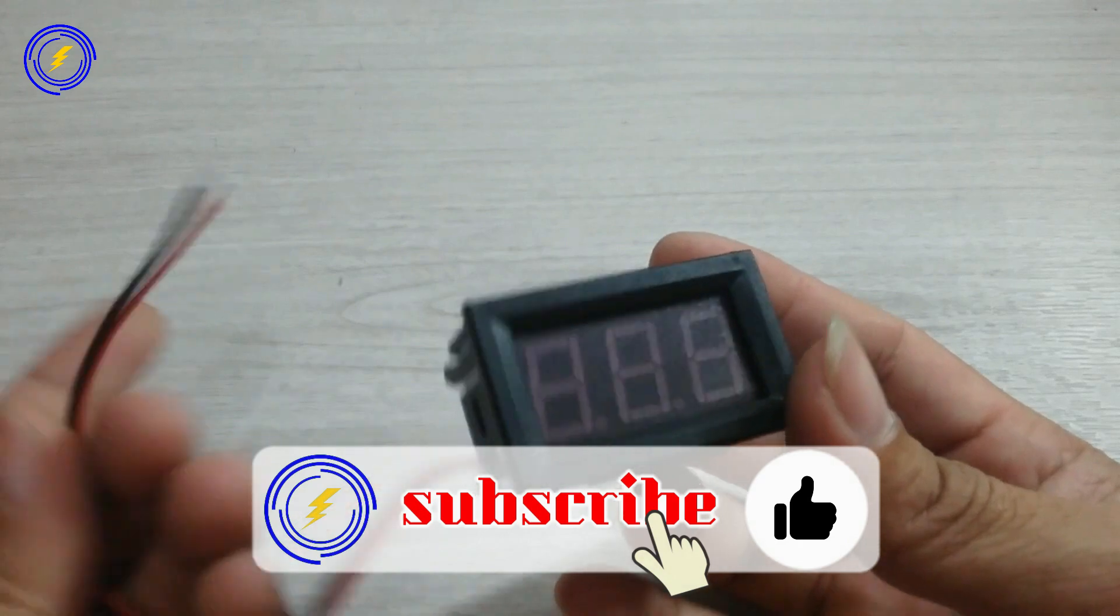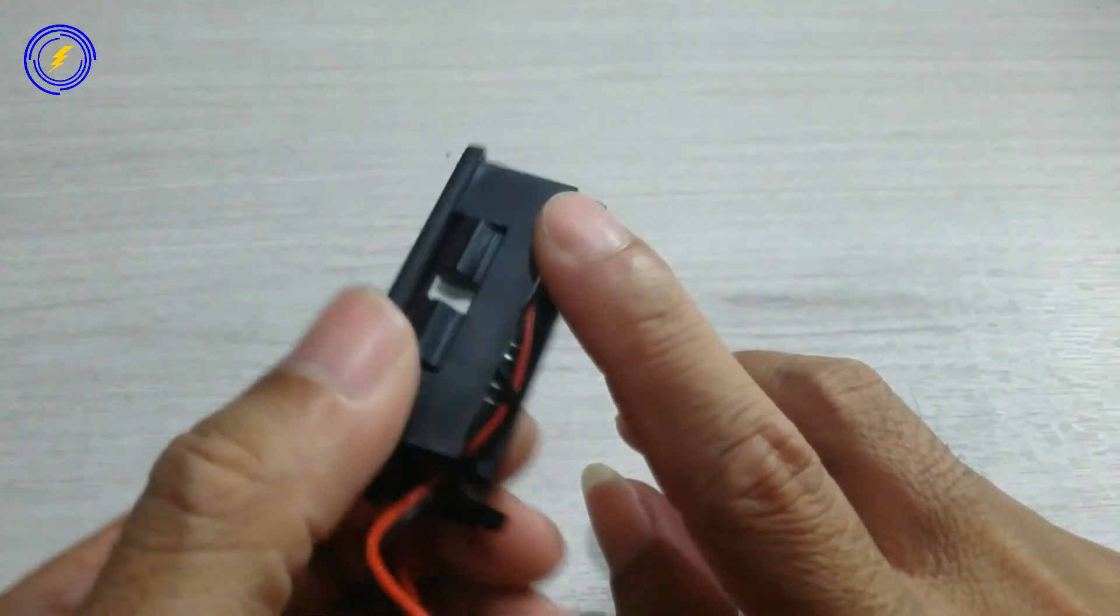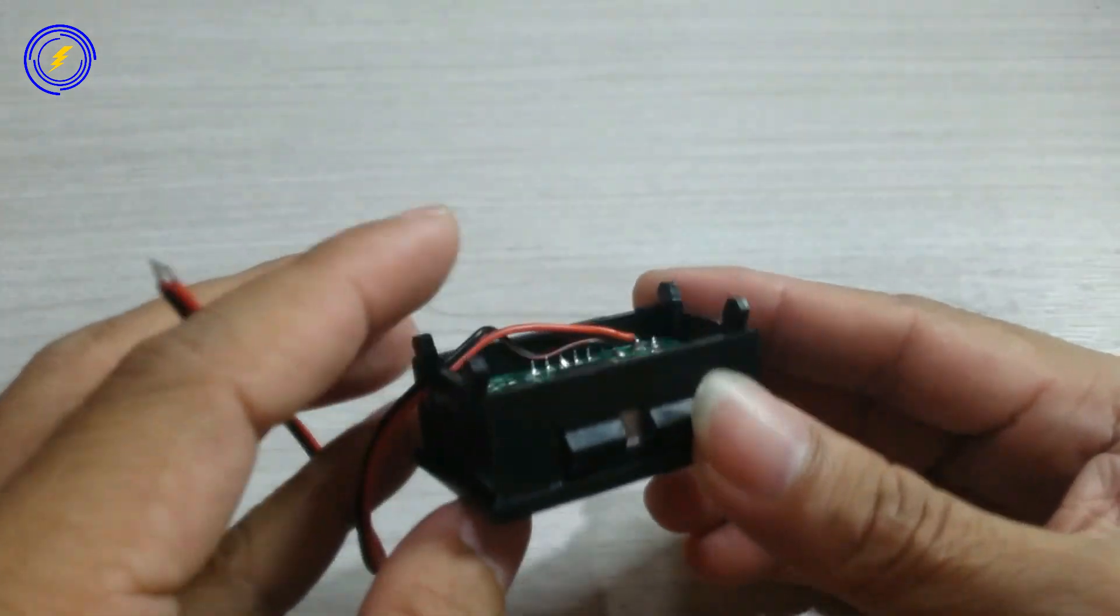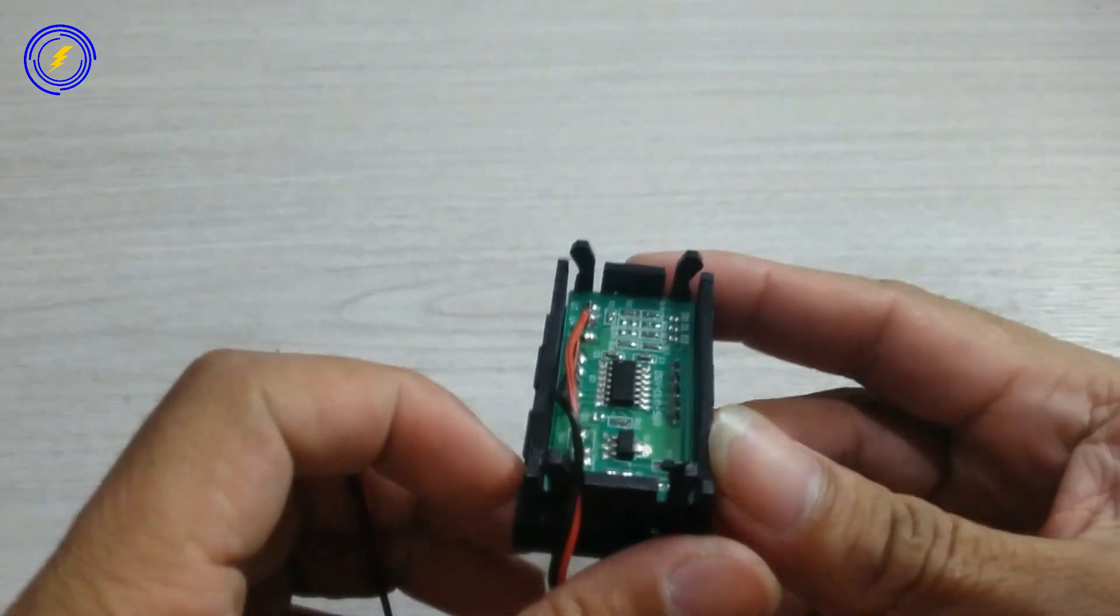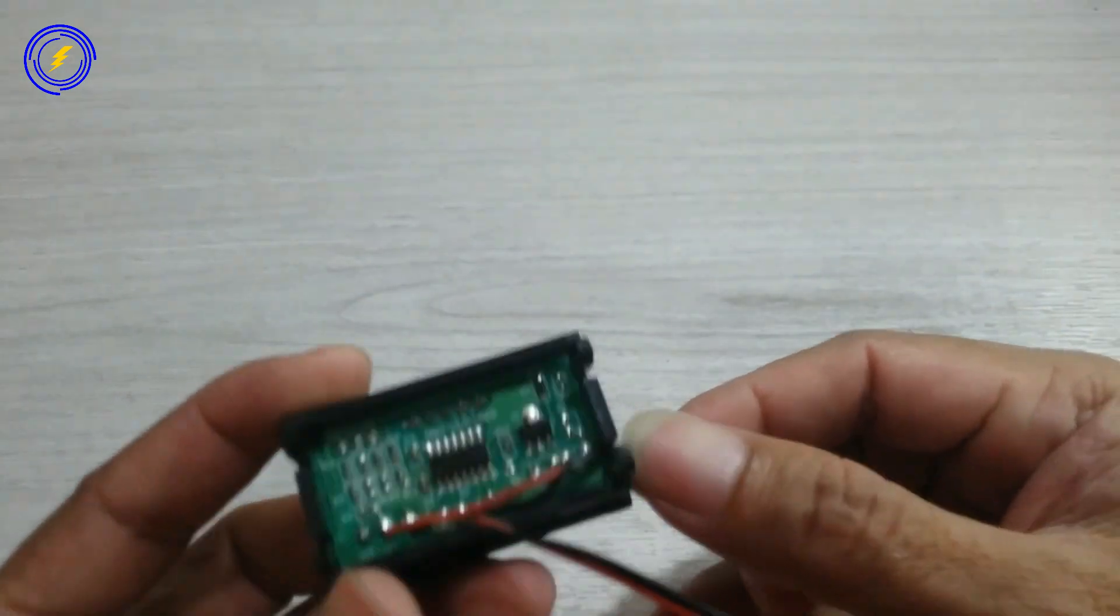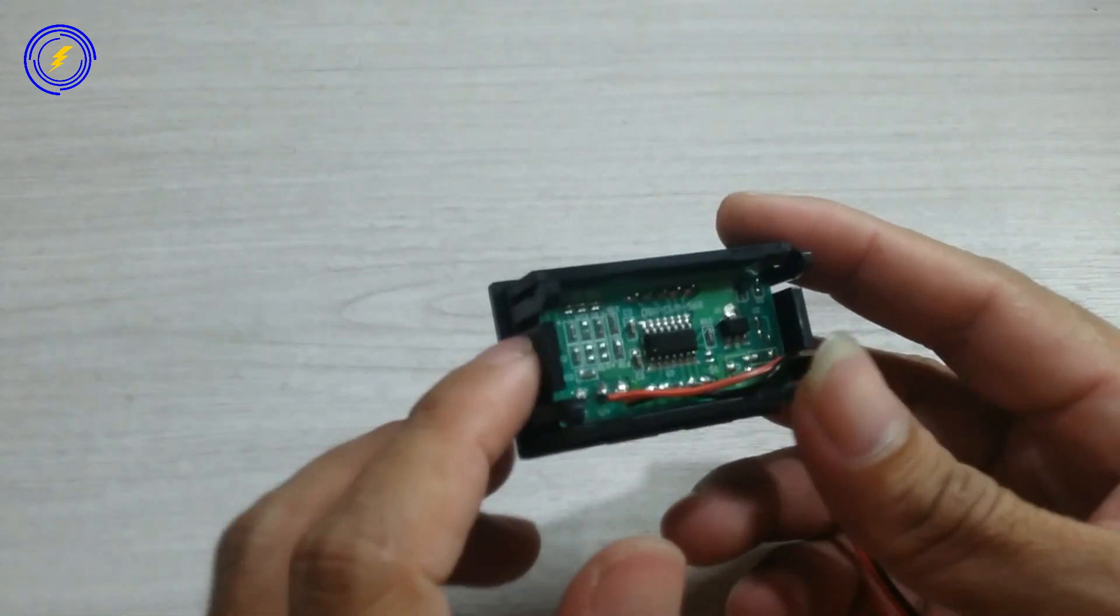Halo, Sobat Kreatif, jumpa lagi di Oneon Channel. Pada kesempatan kali ini, saya akan membuat sebuah alat tes lampu LED dan diode zener. Langsung saja simak videonya sampai selesai. Jangan lupa untuk like and subscribe supaya channel ini bisa berkembang.